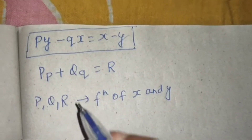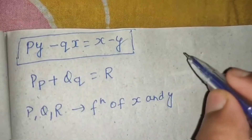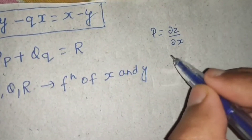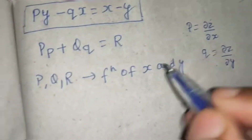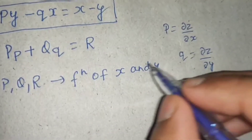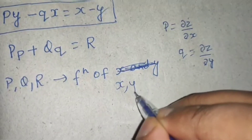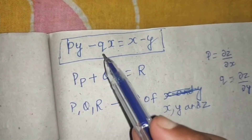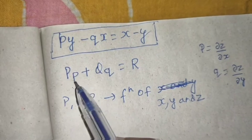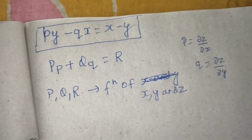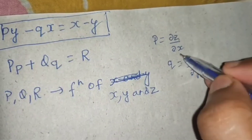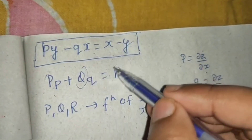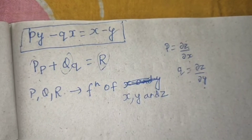One correction regarding Lagrange's format: the small p is del z by del x and small q is del z by del y. The capital P, Q, R in the equation Pp plus Qq equals R are functions of x, y, and z. So to clarify: the small p and q represent the partial derivatives del z by del x and del z by del y, while the capital P, Q, R are coefficient functions of x, y, and z.